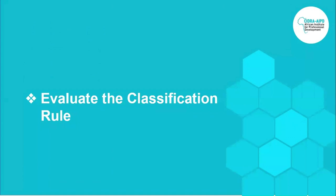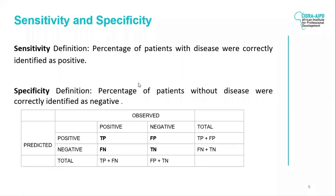To evaluate the classification rule in statistics, we want to have summary measures. Today we're going to introduce four. Two of them are sensitivity and specificity. By definition, sensitivity is the percentage of patients with disease who were correctly identified as positive, and specificity is the percentage of patients without disease who were correctly identified as negative.